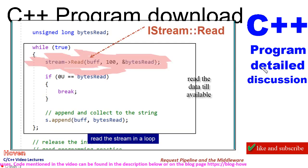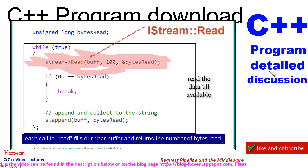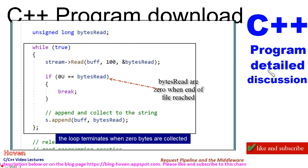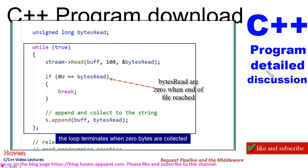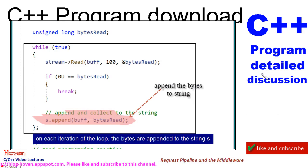We read the stream in a loop. Each call to Read fills our buffer and returns the number of bytes read. The loop terminates when zero bytes are collected. On each iteration of the loop, the bytes are appended to the string s.